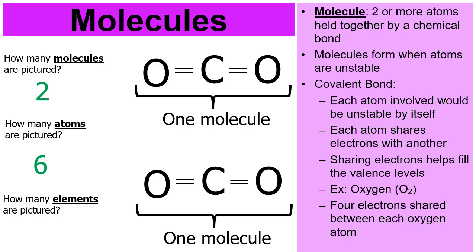How many elements are pictured? I hope you said two. O is the element oxygen. C is the element carbon. Now, this formula in a chemistry equation might look like this: a two in the front to represent the two total molecules, and then CO2. By the way, these are two molecules of carbon dioxide.